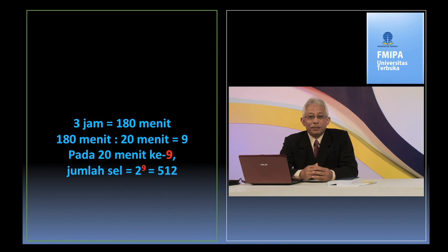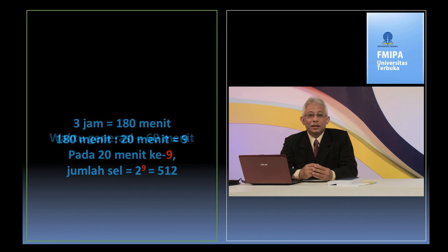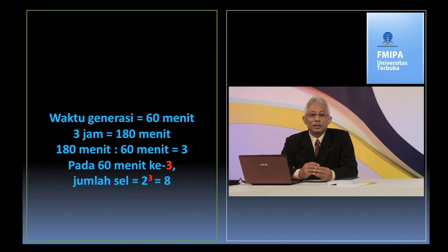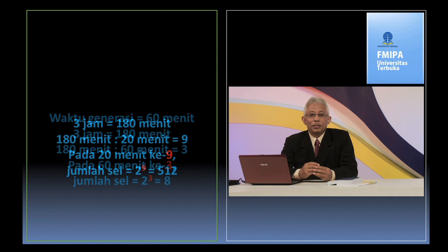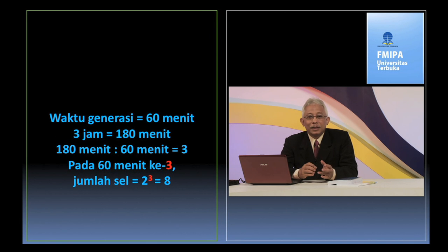Dalam waktu tiga jam atau 180 menit akan terdapat sel sebanyak 2^9 atau 512. Namun, jika karena kondisi lingkungan tertentu yang tidak menguntungkan bagi pertumbuhan bakteri, waktu generasi dapat lebih lama, misalnya 60 menit. Maka dalam waktu yang sama, yaitu tiga jam, jika jumlah sel dengan waktu generasi 20 menit dapat mencapai 512, maka mikroorganisme dengan waktu generasi 60 menit hanya mencapai 2^3 atau sama dengan delapan.